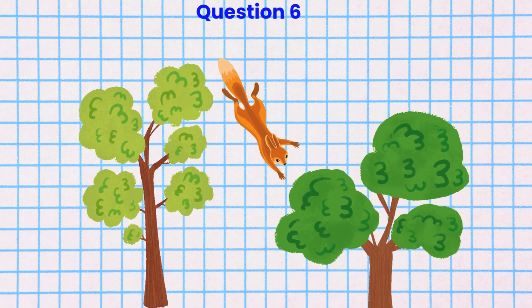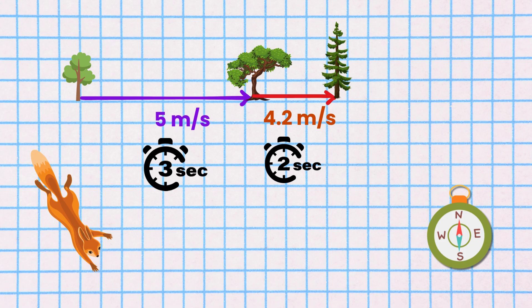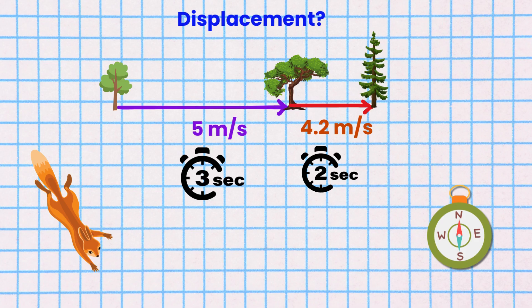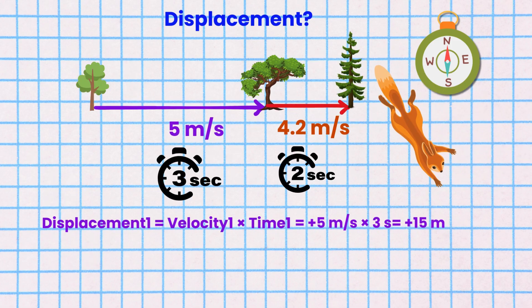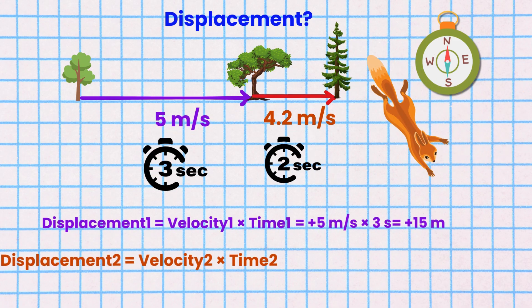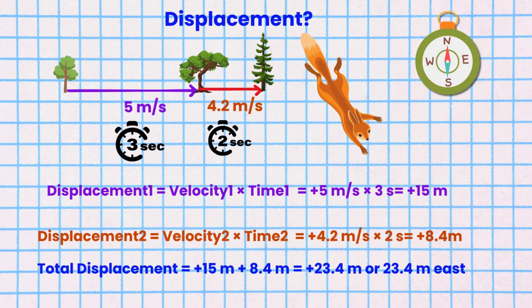Question 6. A squirrel dashes across three branches. First it runs with an average velocity of 5 meters per second east for 3 seconds. Then it sprints with an average velocity of 4.2 meters per second east for another 2 seconds. What is the squirrel's displacement from its starting point? Displacement 1 equals the first velocity times the first time: plus 5 meters per second times 3 seconds, which equals plus 15 meters. Displacement 2 equals velocity 2 times time 2: plus 4.2 meters per second times 2 seconds, which equals plus 8.4 meters. So total displacement is plus 15 meters plus 8.4 meters, which equals plus 23.4 meters.